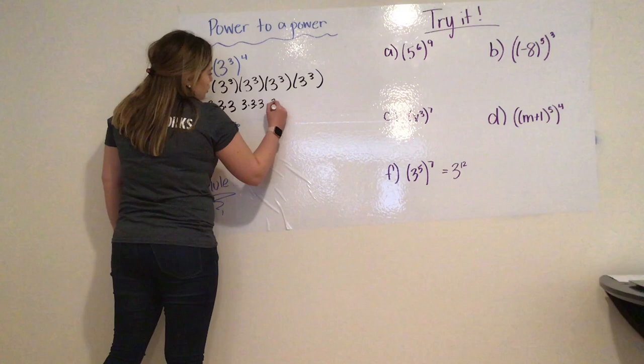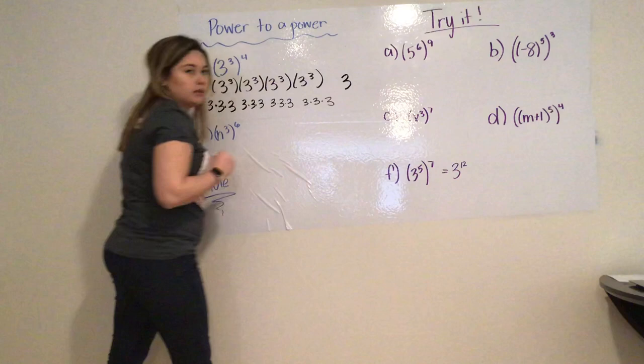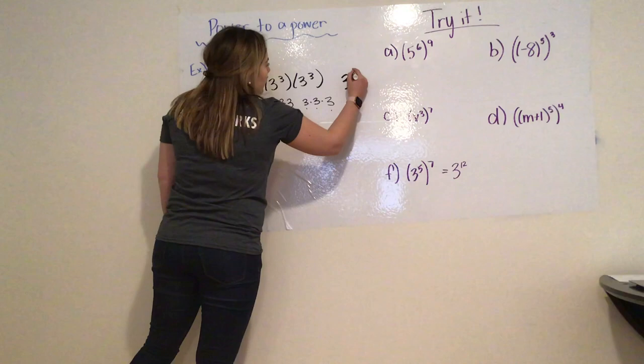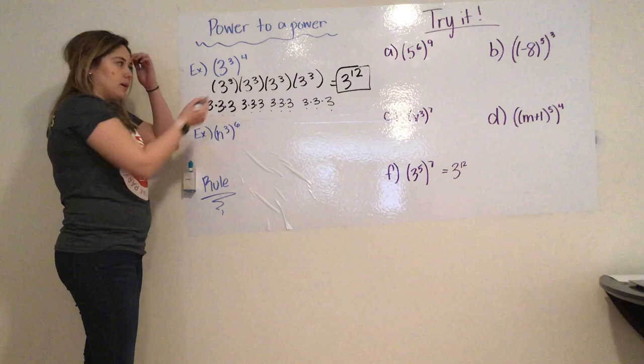All right, so for each 3 to the 3rd, we're multiplied by 3 three times. So that brings us to the total of 3 to be 1, 2, 3, 4, 5, 6, 7, 8, 9, 10, 11, and 12th power. So we do 3 to the 3rd, raised to the 4th, it gives us 3 to the 12th power. That's how I write it as a single power.